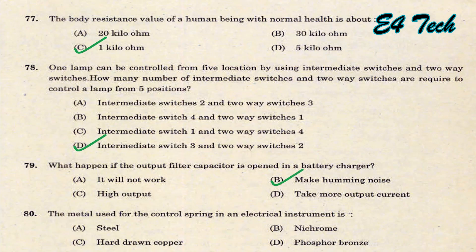The metal used for the control spring in an electrical instrument is phosphor bronze. That is option D.